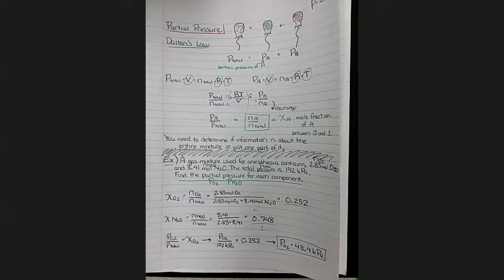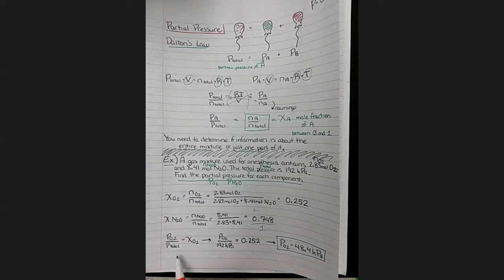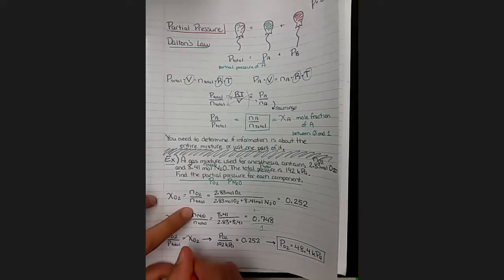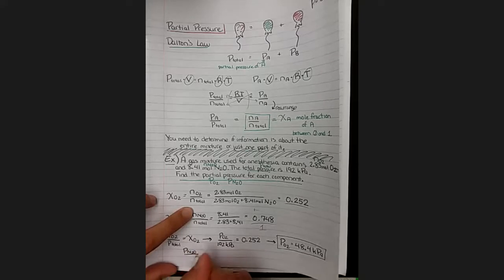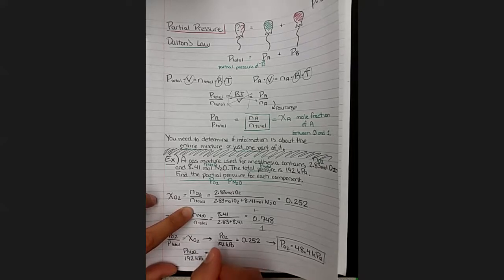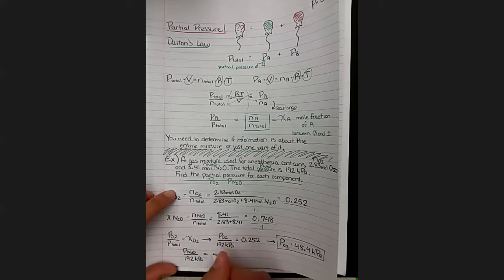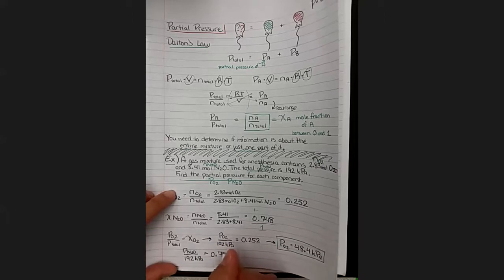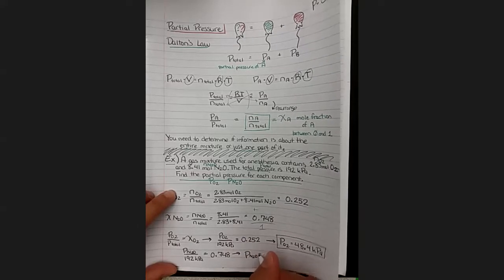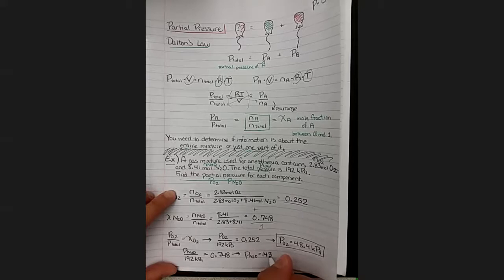So far so good. The same is true here. You can solve the long way for the other fraction, or you can use your knowledge that the total pressure minus one of the partial pressures will give the other one. I'll demonstrate it mostly for my own benefit. So partial pressure of nitrogen over the total 192 equals the N2O mole fraction 0.748. We can solve that to get 143.6.